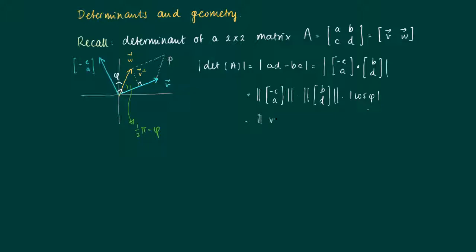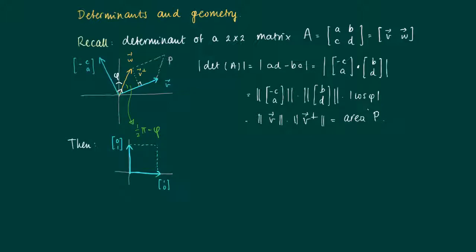Now we look at V perp, which is the vector over here. The length of V perp is the sine of (pi/2 minus phi) times the length of W. This is actually the length of V and V perp, which is the area of the parallelogram.